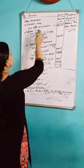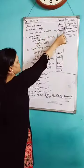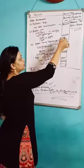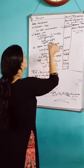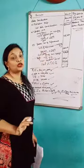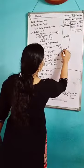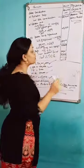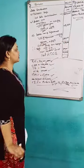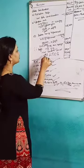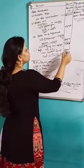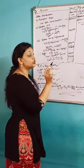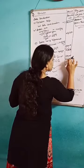Summary of Problem 2: Sales consideration Rs. 20 lakhs, realization expenses nil, net sales consideration Rs. 20 lakhs. Indexed cost of acquisition Rs. 43,350, indexed cost of improvement Rs. 1,20,417. Gross long-term capital gain Rs. 18,36,233. Less exemption under section 54 (new residential house Rs. 2 lakhs). Final net long-term capital gain: Rs. 16,36,233.